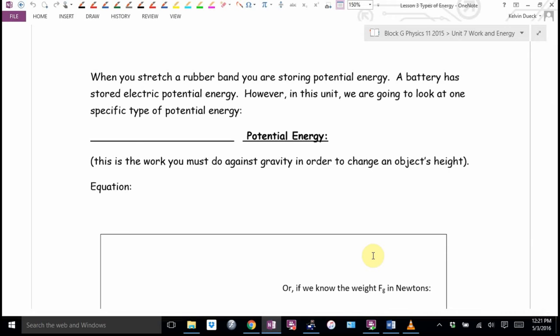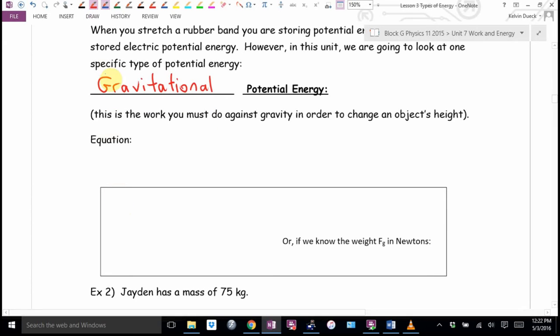So when you stretch a rubber band, you're storing potential energy. But in this unit, we're going to look at one specific type of potential energy. Gravitational potential energy. This is the work that you have to do against gravity to change an object's height. This is why lifting things is tiring. What's the equation? You know what? We've already kind of derived it. My abbreviation for potential energy is this. And it's going to be force times distance, except which force when you lift something against gravity? Mg. And which distance? H. That's potential energy.